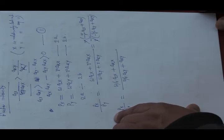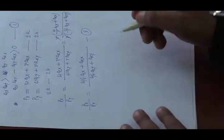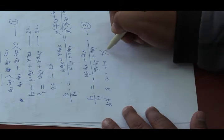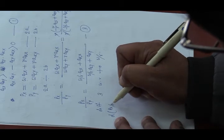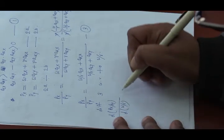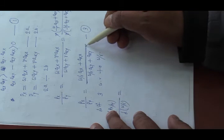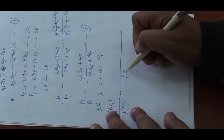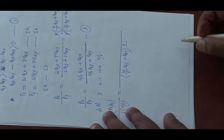Now we need to find the relationship between P_X/P_Y and w/r by differentiating equation 3 with respect to w/r. Using the quotient rule, d(P_X/P_Y) / d(w/r) will be evaluated.